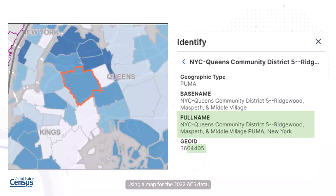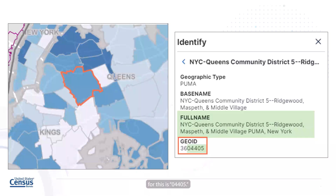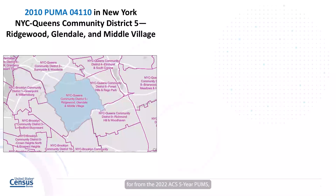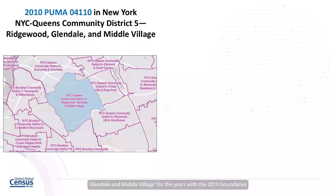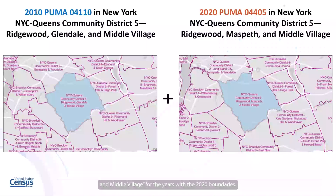Using a map for the 2022 ACS data, I found the area that I'm interested in. Then, using the identify functionality in the site, I determined that the name of this PUMA using the 2020 boundaries is NYC Queens Community District 5, Ridgewood, Maspeth, and Middle Village. The GOID for this is 04405. The 36 shown at the front of the full GOID is the state FIPS code for New York. So if this was the PUMA that I needed to get data for from the 2022 ACS five-year PUMS, I would actually need to use two PUMAs: PUMA 04110 (NYC Queens Community District 5, Ridgewood, Glendale, and Middle Village) for the years with the 2010 boundaries, and PUMA 04405 (NYC Queens Community District 5, Ridgewood, Maspeth, and Middle Village) for the years with the 2020 boundaries.